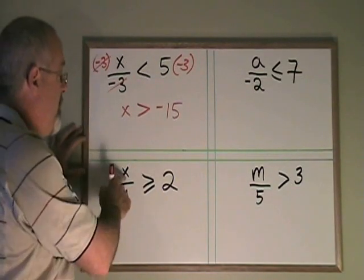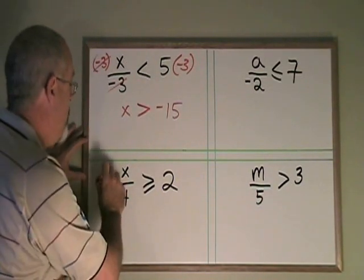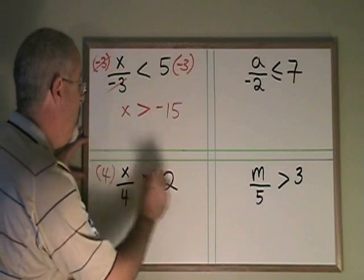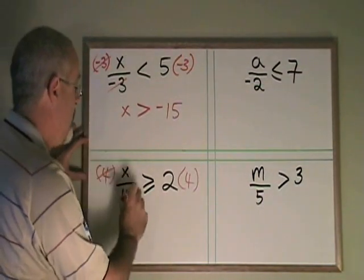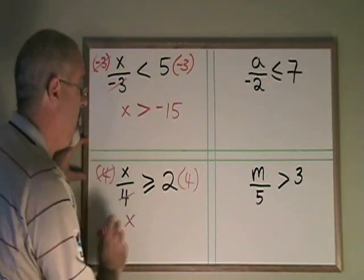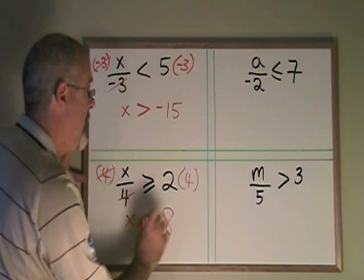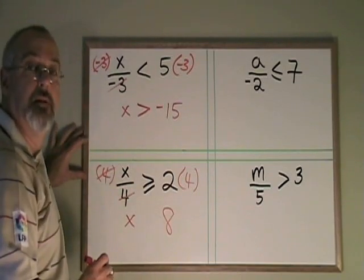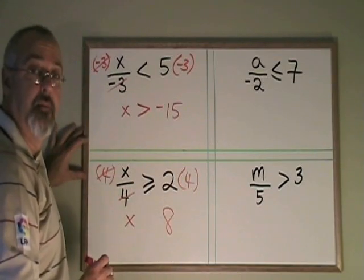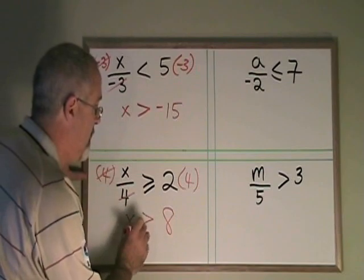Here, my x is being divided by a 4. I'm going to multiply both sides by a 4. These cancel. x is isolated. 2 times 4 is 8. But I multiplied both sides by a positive number, so I leave the symbol as it is.